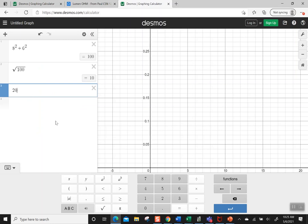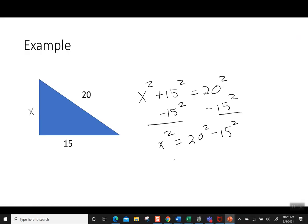So 20 squared minus 15 squared is 175. So x squared is 175. We're going to take the square root, then take the square root. So let's go back to Desmos and find the square root of 175.